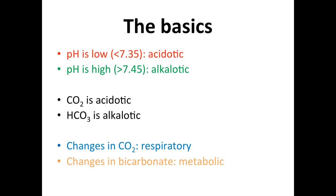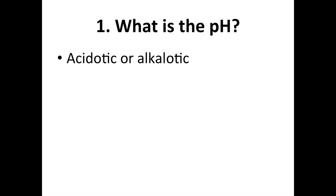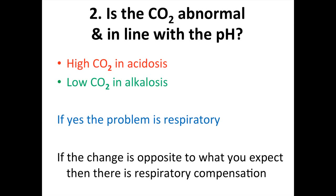When presented with a blood gas, first ask yourself: what is the pH — is it acidotic or alkalotic? Secondly, is the carbon dioxide abnormal and in line with the pH? Is the carbon dioxide high when the pH is acidotic? Is the carbon dioxide low and the pH alkalotic? If yes, the problem is respiratory in nature. If the change is opposite to what you expect, then there is respiratory compensation for a metabolic problem.